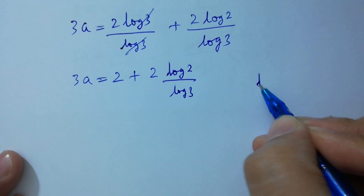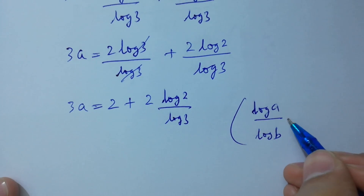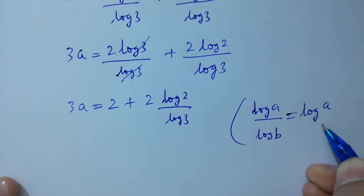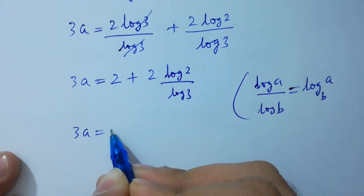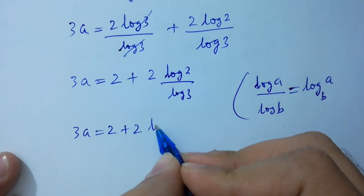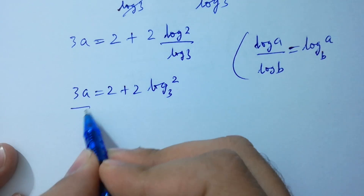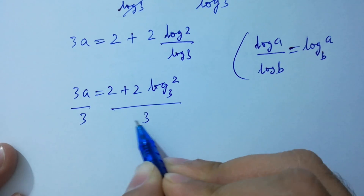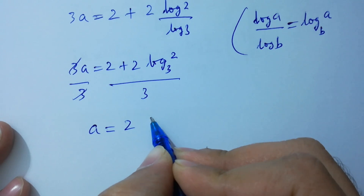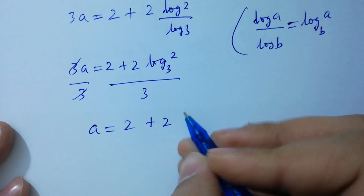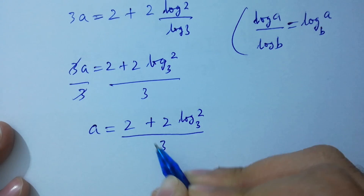As log A over log B equals log A to the base B, we have 3a equals 2 plus 2 log 2 to the base 3. Dividing both sides by 3, the 3s cancel, giving a equals (2 plus 2 log 2 to the base 3) over 3.